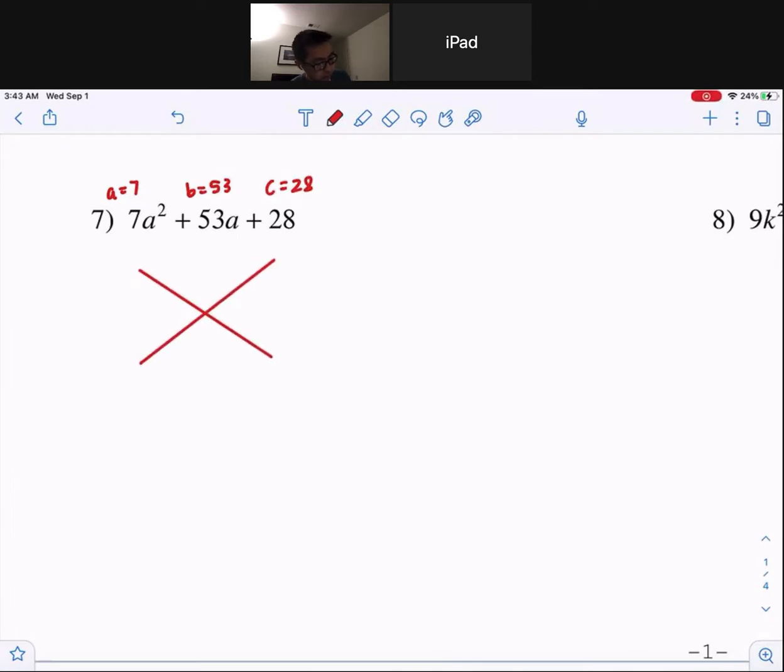X method, a times c up top, b on the bottom. A times c, 7 times 28 is 196, and our b value is 53. This is hard because there's a lot of numbers you got to guess and check. So if I did make a factors list, you guys, 2 times 98.